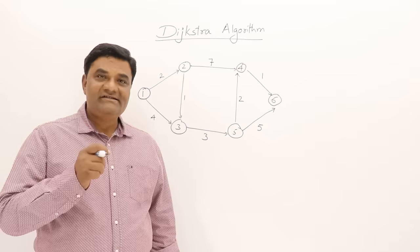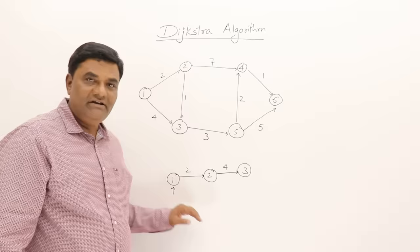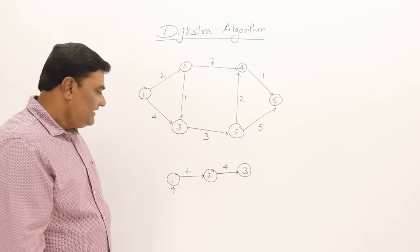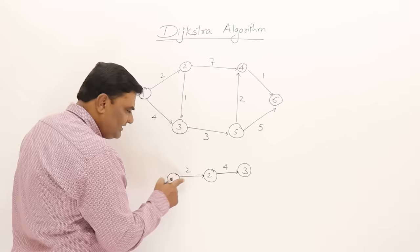To understand the approach of Dijkstra's algorithm, I will take a very small example. I have taken a very small graph. If I say one is the starting vertex and I want to find the shortest path to vertices 2 and 3, then from this graph there is a direct path to vertex 2, so its cost is 2. And there is no direct path to 3, so we don't know what that path is.